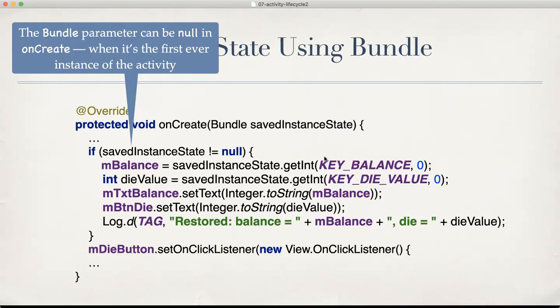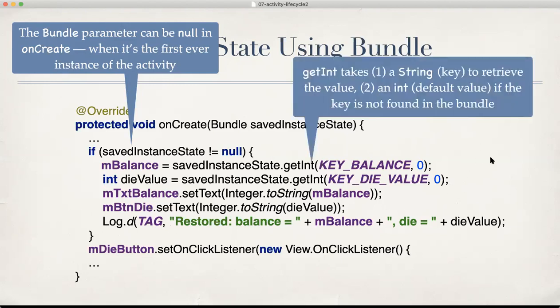So we check for that. And then we extract the integer with the key balance into mBalance. We extract the integer with the key die value into a local variable. And because we don't have a set method on the die, we'll just use a local variable and just show the value on the die. So next, we just set those values for the text balance and the button die. And finally, we log what we restored. The getInt method has two parameters. The first is a string, which is the key to retrieve the value. It should be the same as the one we stored the value with. And the second parameter is an int, which is the default value. It should return if the key is not found. We are setting both the default values to zero. So in case the key is not found, then we'll get a zero. That's all.